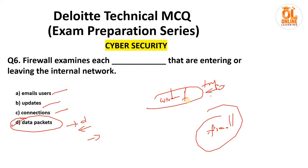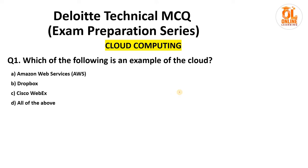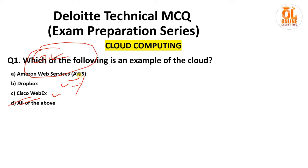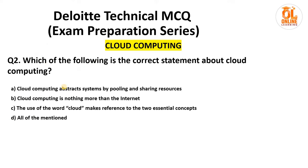Let's move to the cloud computing section. Which of the following is an example of cloud? Amazon Web Services, Dropbox, Cisco, and Solid. The answer is option D: Solid is not a cloud service. AWS is a cloud service we all know. Dropbox is a cloud storage service from Microsoft services. This is a general knowledge question — it's not from books specifically, it's general knowledge from the cloud computing section.